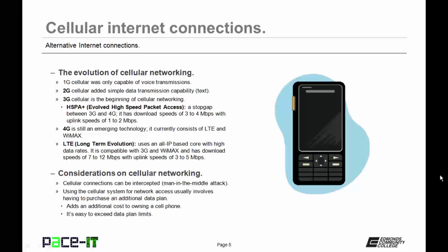Then along comes 4G, which is still an emerging technology. It currently consists of LTE and WiMAX. LTE stands for Long-Term Evolution, and it uses an all-IP-based core with high data rates — well, at least reasonably high. It is backward compatible with 3G, and it is compatible with WiMAX. LTE has download speeds of 7 to 12 megabits per second with upload speeds of 3 to 5 megabits per second — a whole lot faster than HSPA+, but still not as fast as a wired connection to the internet.